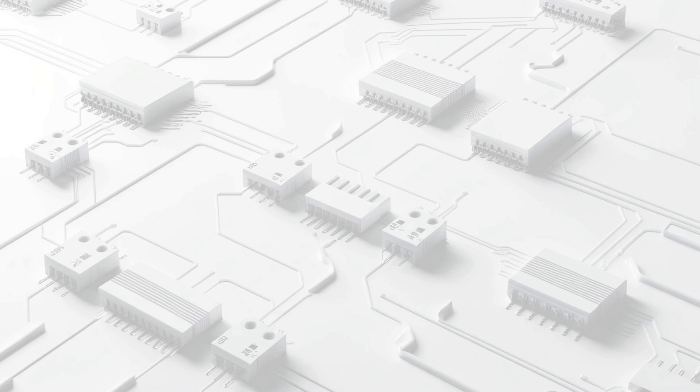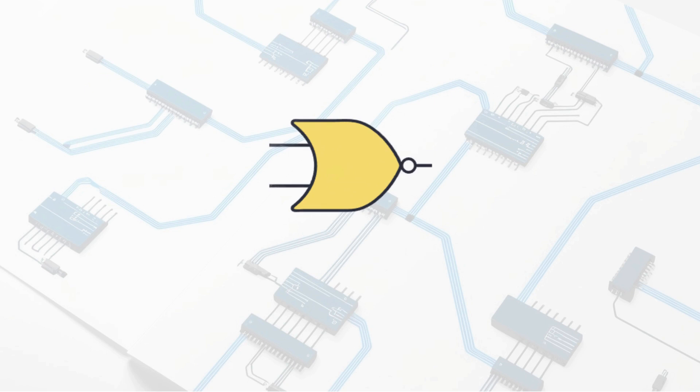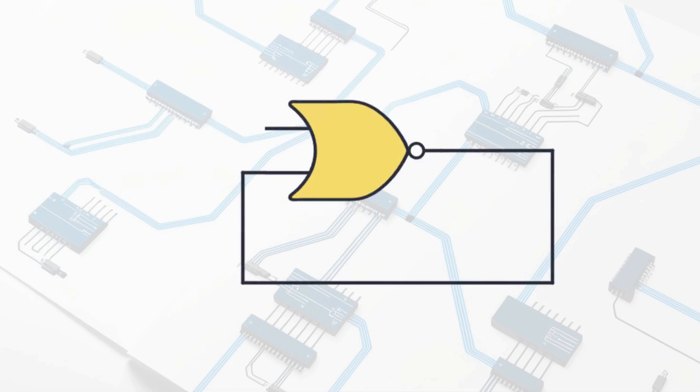Now, here's an interesting question. If logic gates are purely combinational, meaning they only react to current inputs, how do we get a circuit to remember something? Think about it. If a circuit's output only depends on its inputs at that moment, what's missing? What if we were to feed the output back into the circuit? Could it then store some value over time?